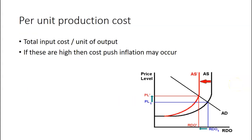For cost-push inflation, you usually look at the per-unit production cost: total input cost divided by units of output. For example, a minimum wage increase means it costs more to hire the same person per hour. The total input cost is higher because you pay them more per hour, divided by the same number of units — so your budget doesn't go as far. That gives us cost-push inflation.